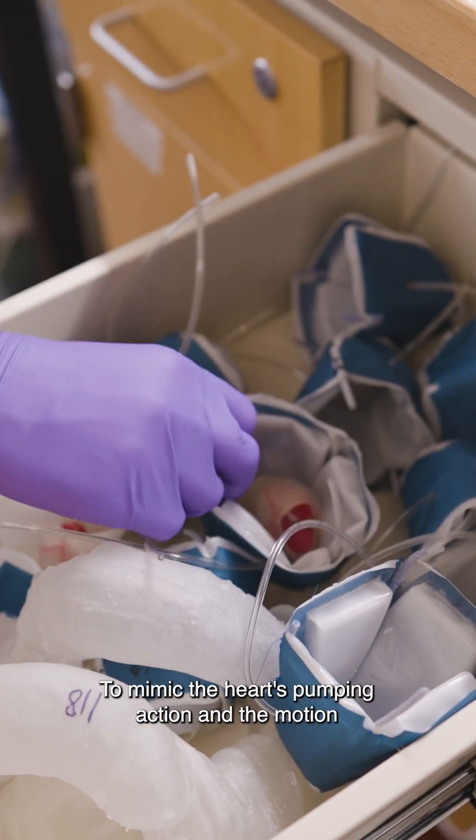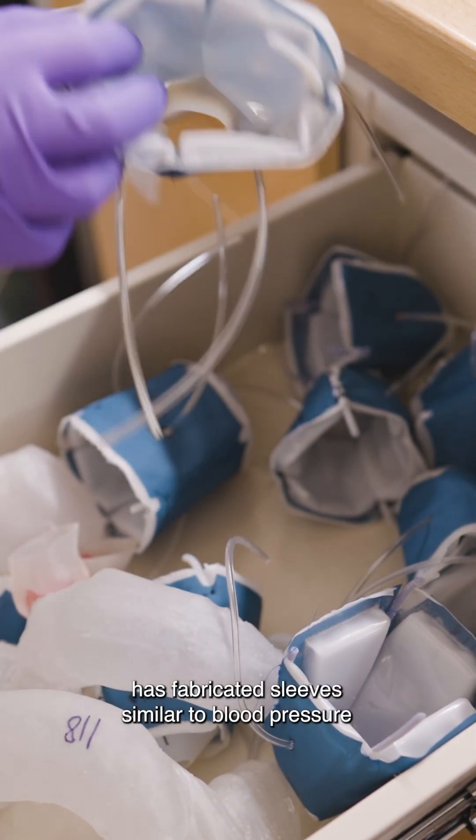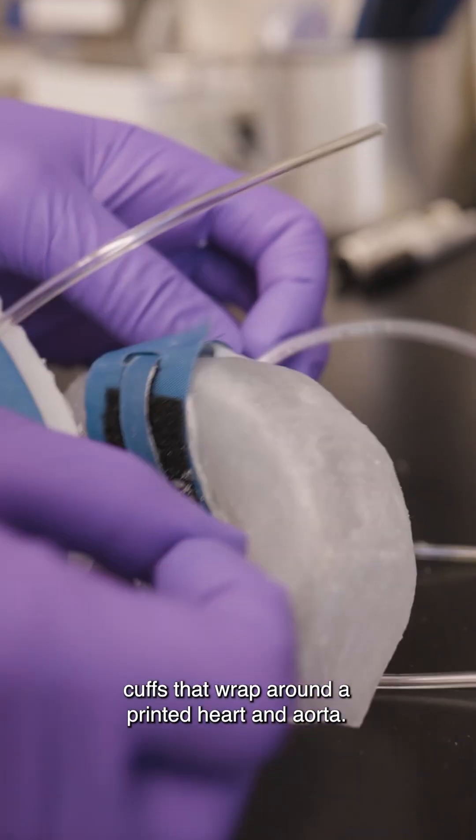To mimic the heart's pumping action and the motion of the aortic valve in disease, the team has fabricated sleeves, similar to blood pressure cuffs, that wrap around a printed heart and aorta.